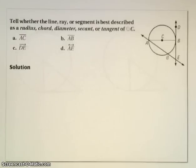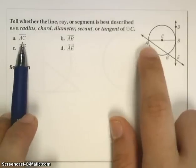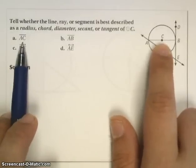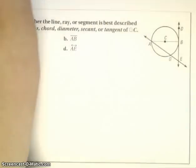Here are some examples using the different terms we've already described. Take a moment and pause this video to try them yourself, and then press play when ready. AC is a segment, so that tells me that C lies on the center of the circle, A lies on the circle, tells me that AC is a radius.